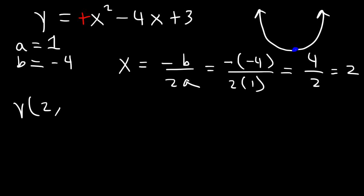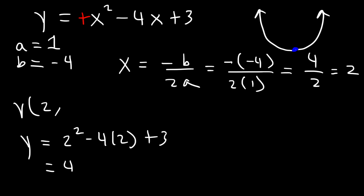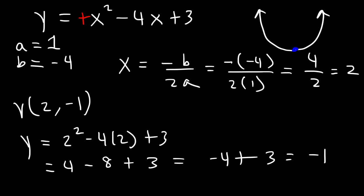Now we need the y-coordinate, so we replace x with 2 in the equation: y = 2² - 4(2) + 3 = 4 - 8 + 3 = -1. So the vertex is (2, -1). That's how you find the vertex given an equation in standard form.